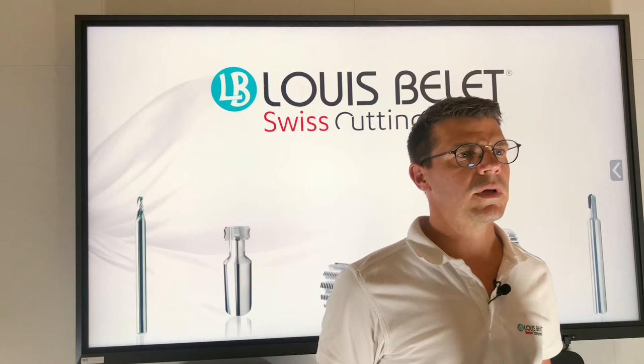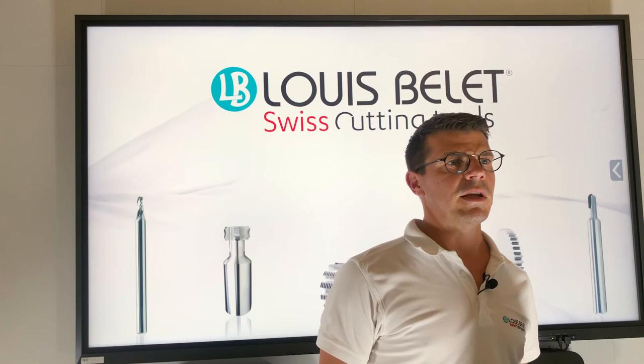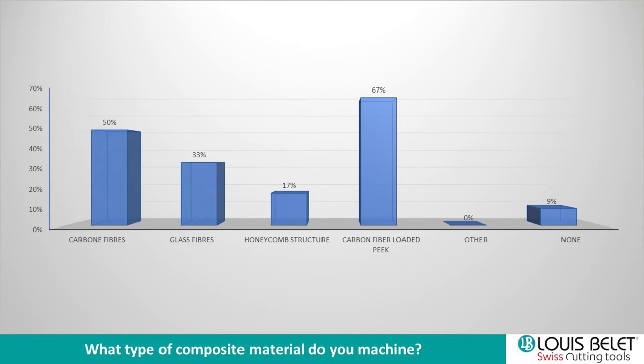I come to the end of the presentation — please ask questions if you have any. Let me share the poll results. What type of composite material do you machine? Most answered carbon fiber-loaded PEEK at 67% — one of the most demanded materials to cut from our customers. Then carbon fibers in general at 50%, glass fibers at 33%, and honeycomb at 17%.